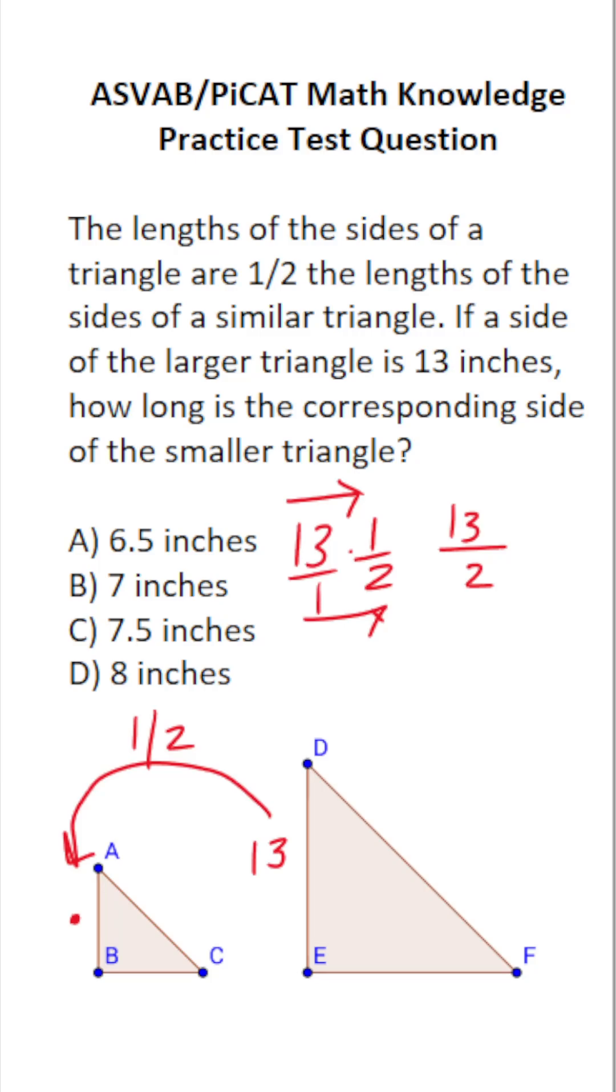If you can't do 13 divided by two mentally, you could always do the long division. 13 divided by two. Two goes into 13 six times without going over. Two times six is 12. 13 minus 12 is one. We have to add a decimal and a zero placeholder. Bring the decimal into our answer. Drop down the zero placeholder. Two times five is exactly 10 with no remainder.